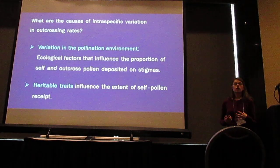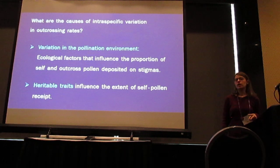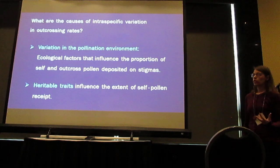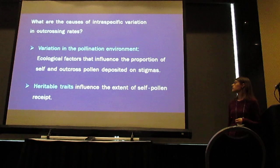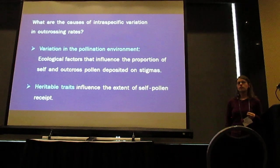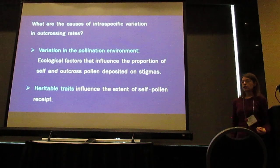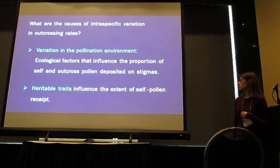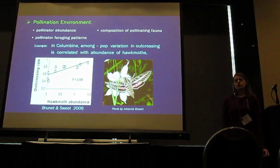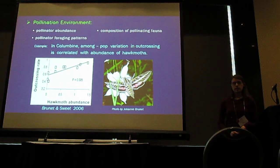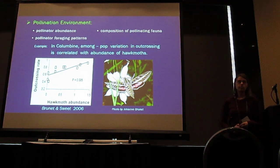What are the causes of intraspecific variation in outcrossing rate? There are two main mechanisms. First, variation in the pollination environment includes ecological factors that influence the proportion of self and outcrossed pollen deposited on stigmas. Second, heritable traits influence the extent of self pollen receipt. The pollination environment may vary in pollinator abundance, the composition of pollinating fauna, and pollinator foraging patterns.